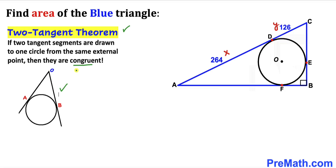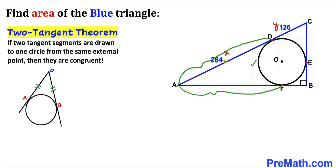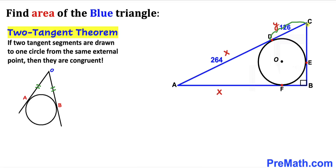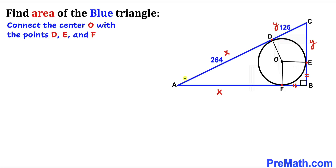Applying the two-tangent theorem: segment AD is congruent to segment AF, so if AD = x then AF = x as well. Likewise, segment CD equals CE, so if CD = y then CE = y. Finally, segment EB is congruent to segment BF.